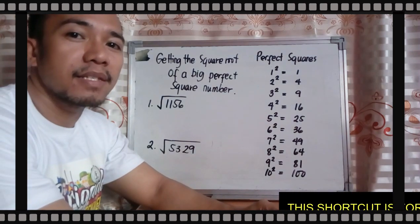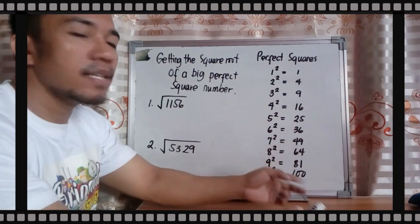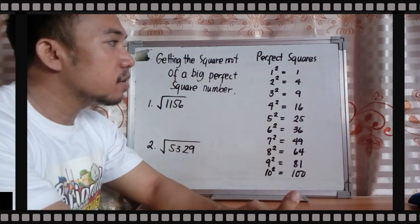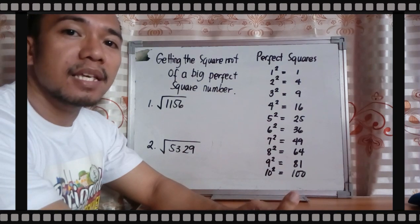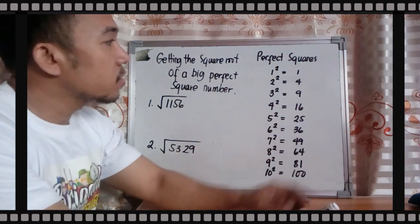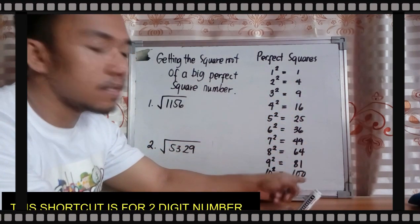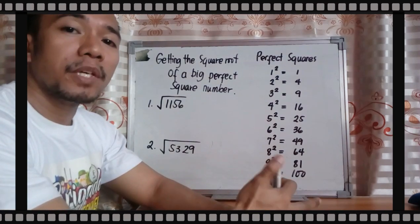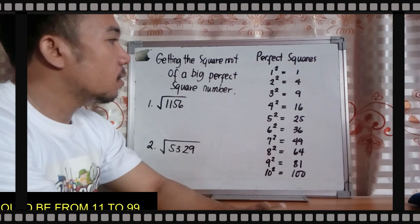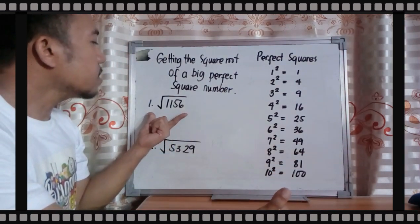It's very easy to memorize actually. We need to memorize this because we will use the ones digit — the last digit — of the perfect squares. Those last digits are: 1, 4, 9, 6, 5, 6, 9, 4, 1, 0.